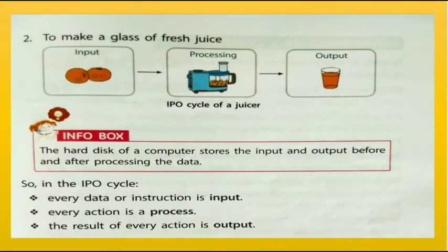Now let's understand the second example. To make a glass of fresh juice: the input is oranges, the processing is when you put them into a mixer, and the output is fresh juice.